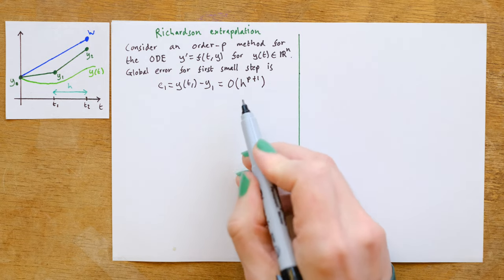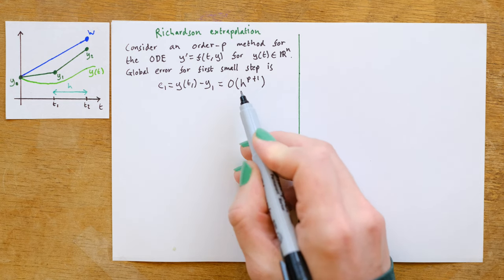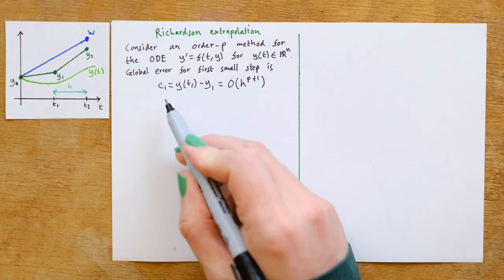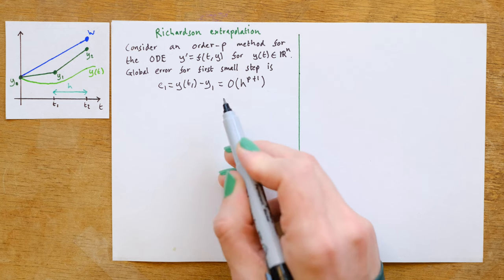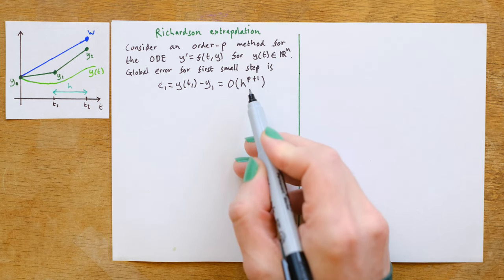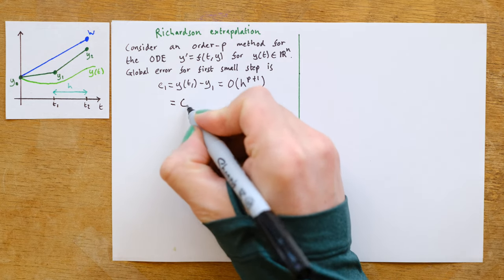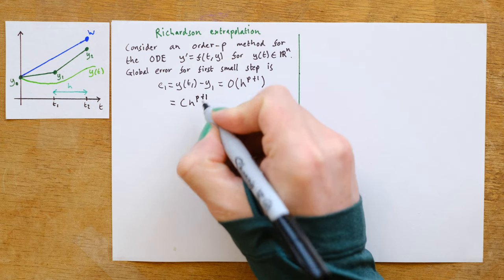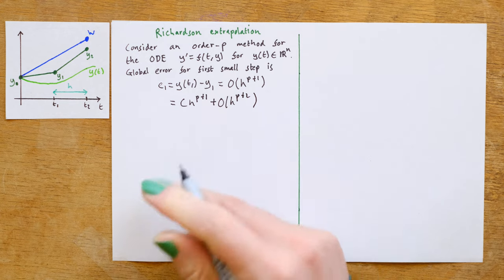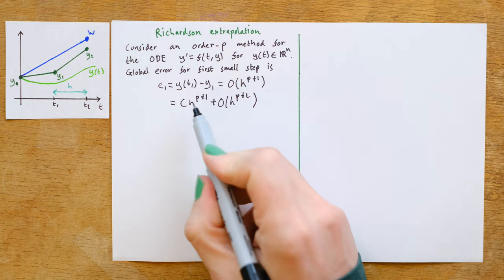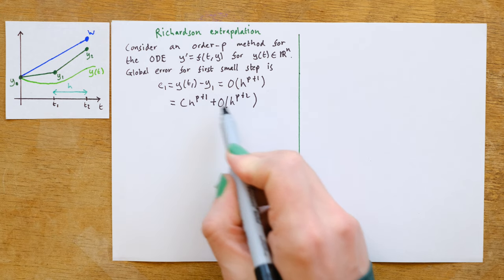Now we can write down this general expression, but the key insight with Richardson extrapolation is that this global error is actually following from Taylor series calculations. So we could rewrite this and pull out the leading order term in this Taylor series. That would allow us to write that this is equal to c times h to the p plus 1 plus O of h to the p plus 2. We don't know what this constant c is, but we know that the global error will take this form.